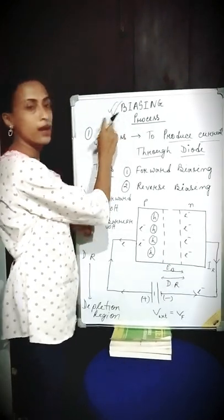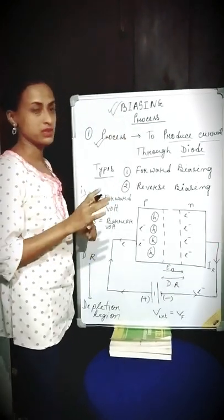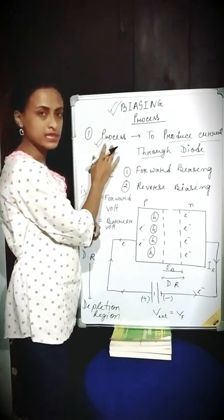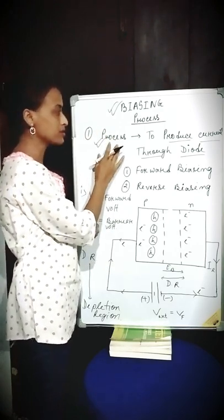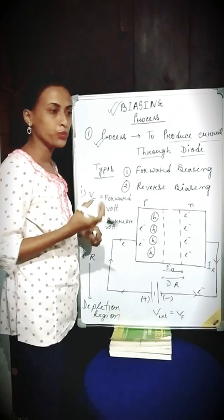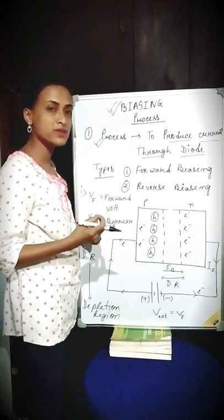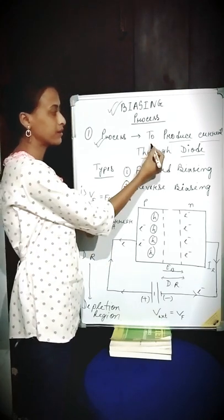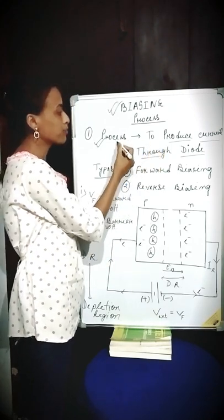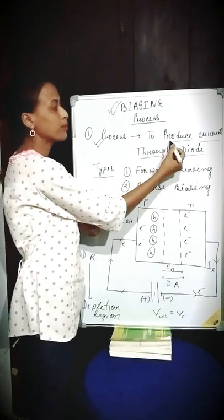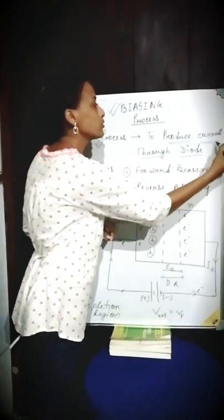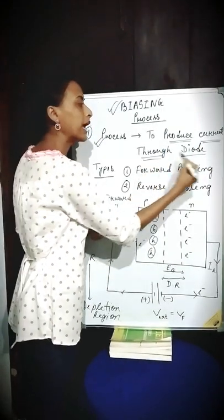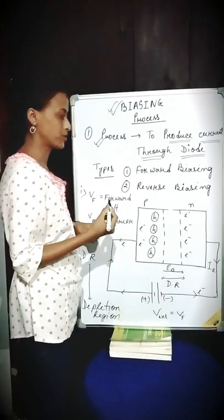What is a biasing process? Biasing is basically a process with the help of which we can produce current through a diode — that is, it's a process with the help of which we can produce current through any PN junction diode.